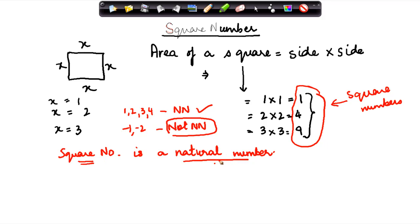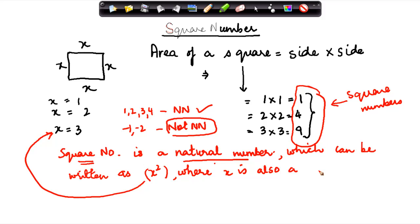Hence a square number is a natural number which can be written as x square. I had taken these values for x square where x is also a natural number.